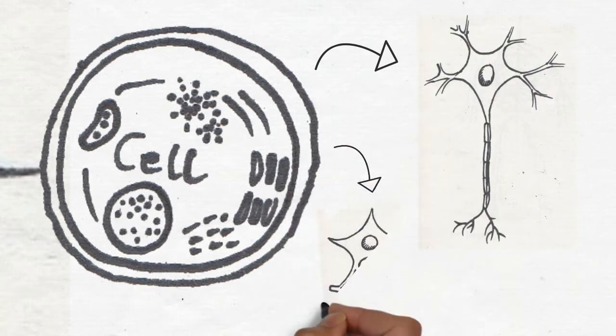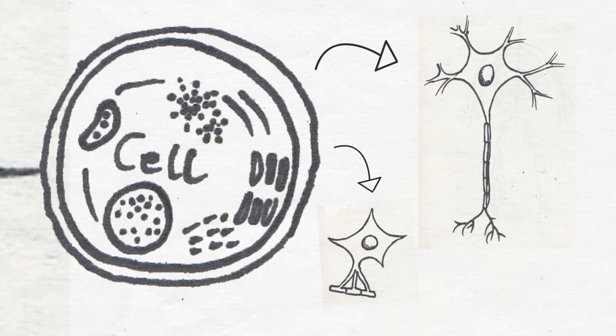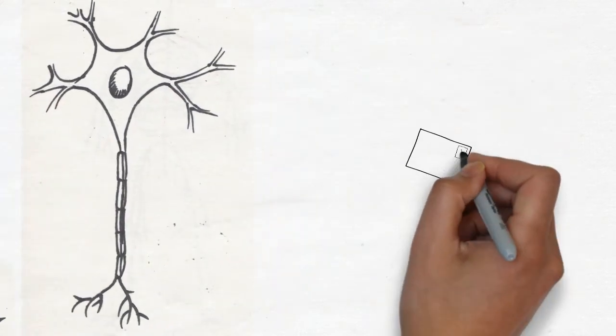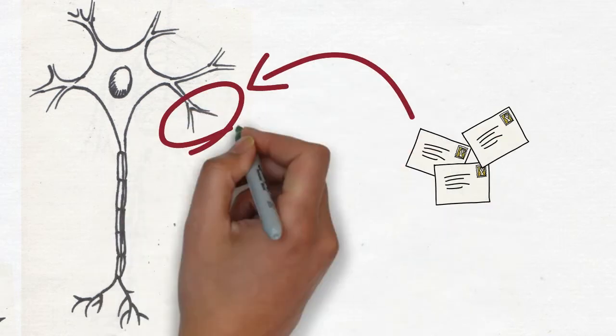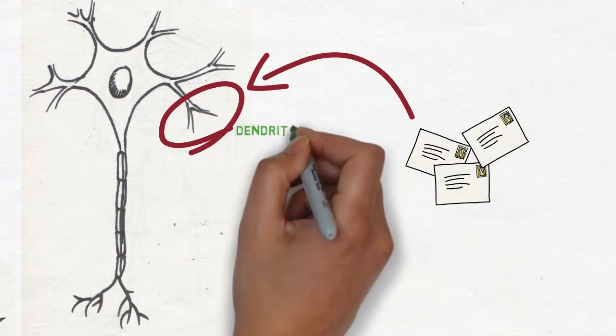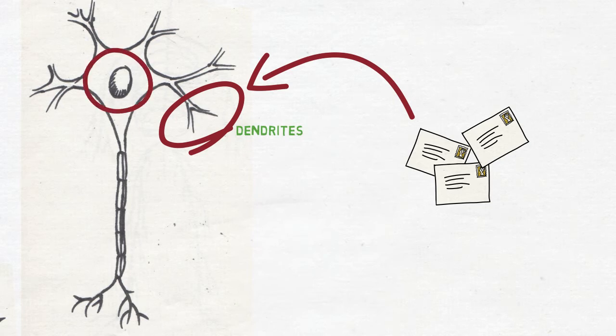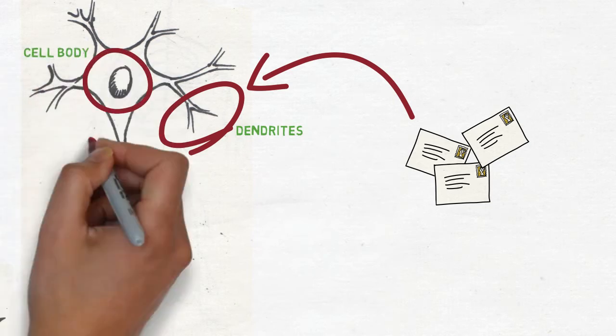As the messengers of the body that receive and send messages within the system, neurons have a special structure. Its dendrites receive messages from other cells and transmit them to the cell body, which in turn sends the messages to axons.